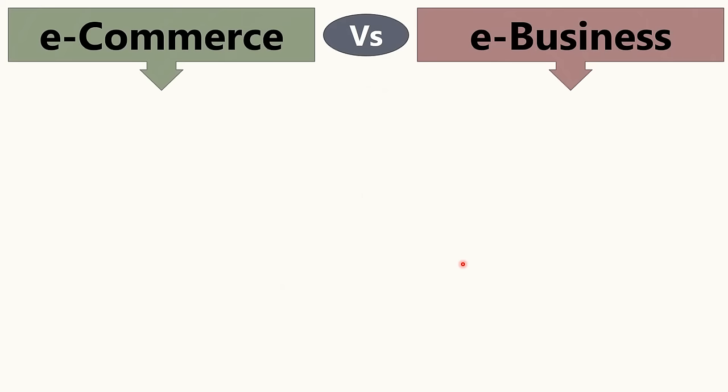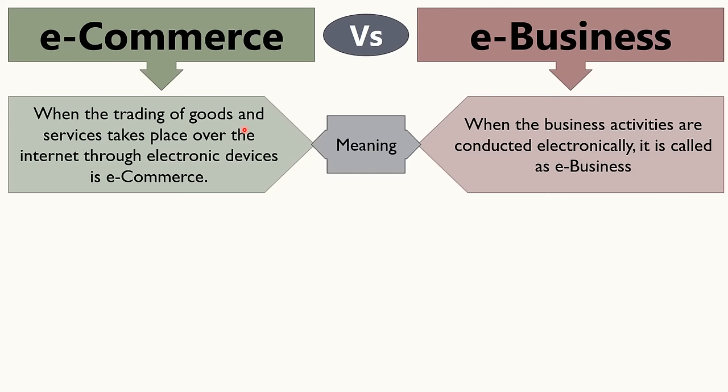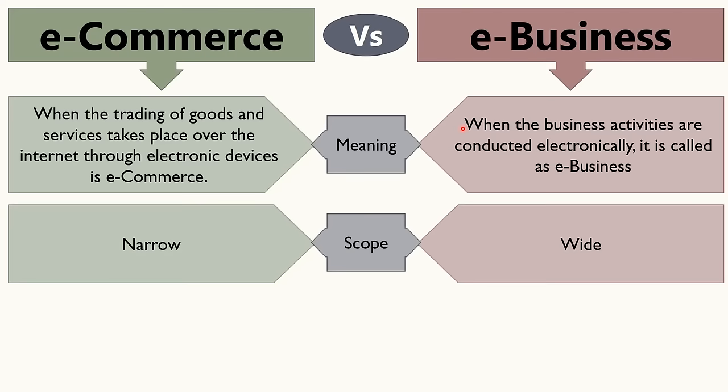Looking at the difference between e-commerce and e-business — in terms of meaning, when the trading of goods and services takes place over the internet through electronic devices, it is called e-commerce, whereas when business activities are conducted electronically, it is called e-business. When it comes to scope, the scope of e-business is wider in comparison to e-commerce because e-business covers e-commerce as well.